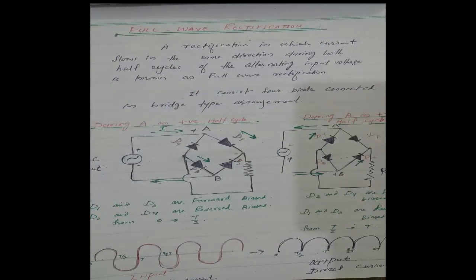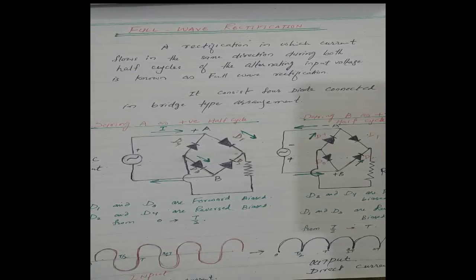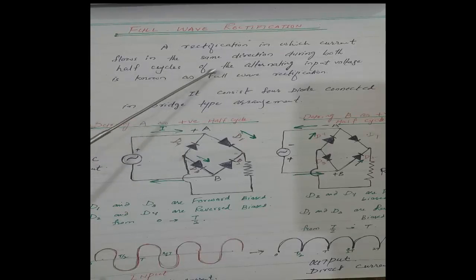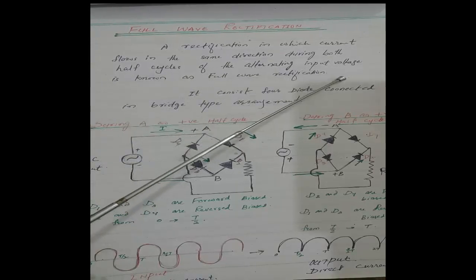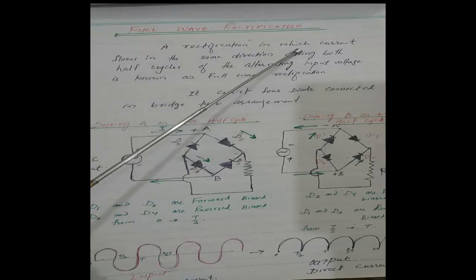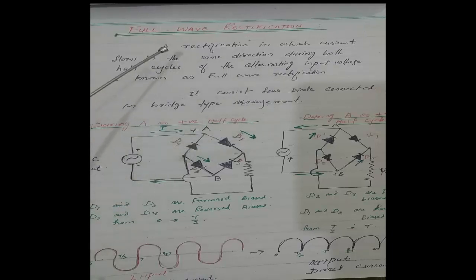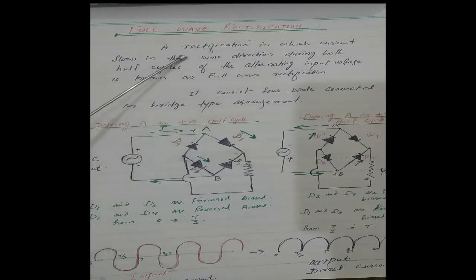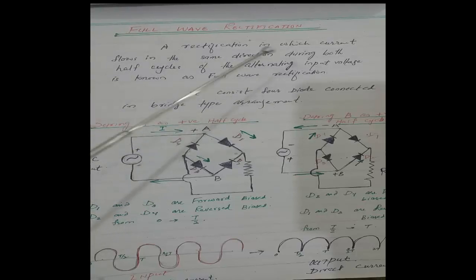Number two: Full Wave Rectification. Half wave rectification का मतलब है कि unique direction में current मिलेगा केवल half cycle के लिए, दूसरे half cycle के लिए current नहीं होगा। Full wave rectification वह process है जिसमें current flows in the same direction during both half cycles of the alternating input voltage। इसमें हमें current मिलेगा एक ही direction में, alternating current से, और दोनों ही half cycles में current की direction same होगी।